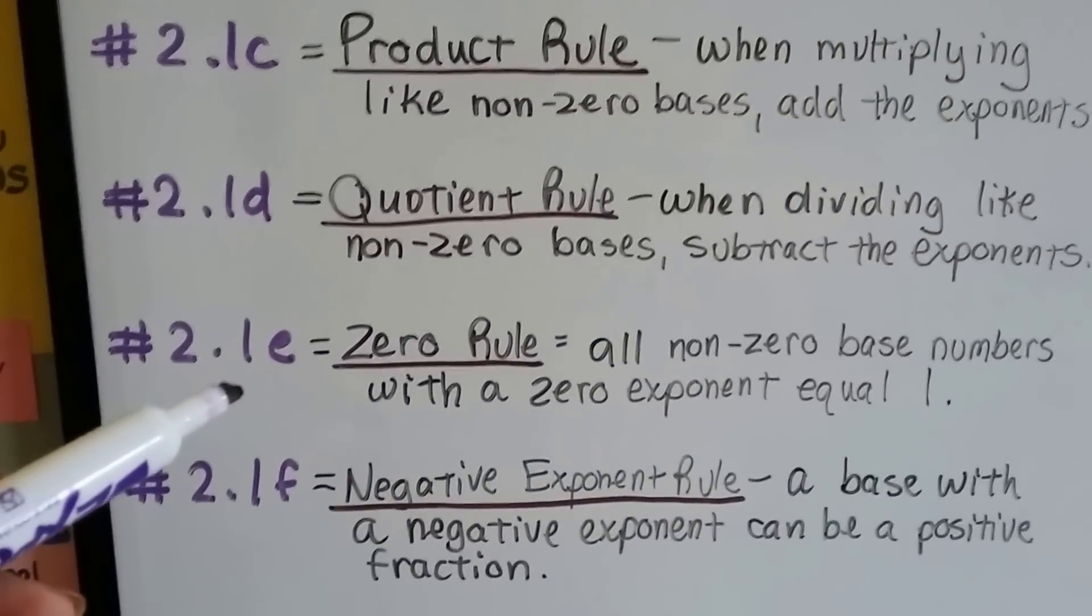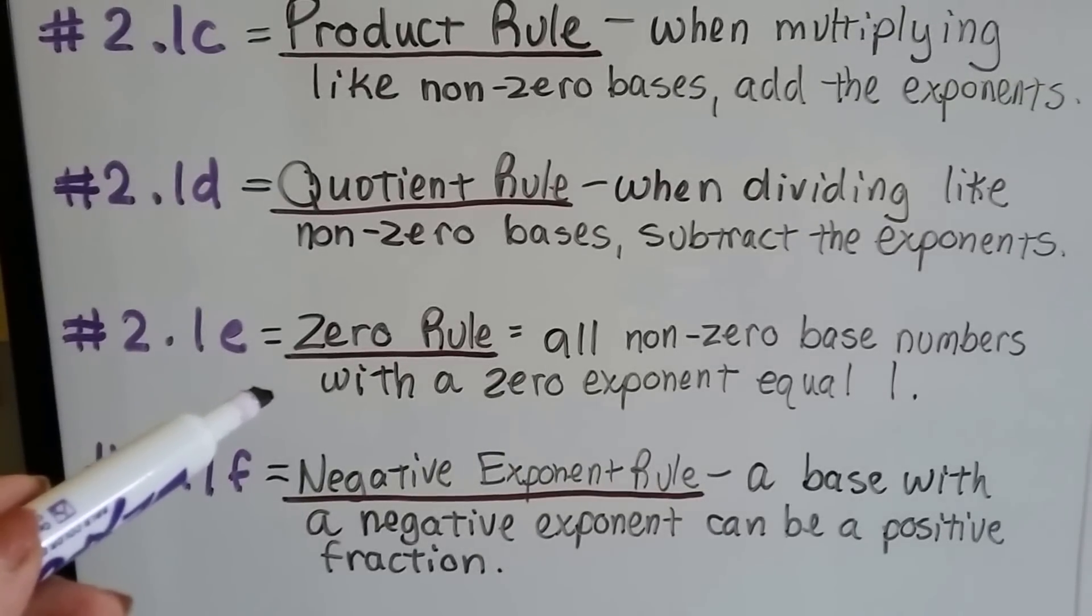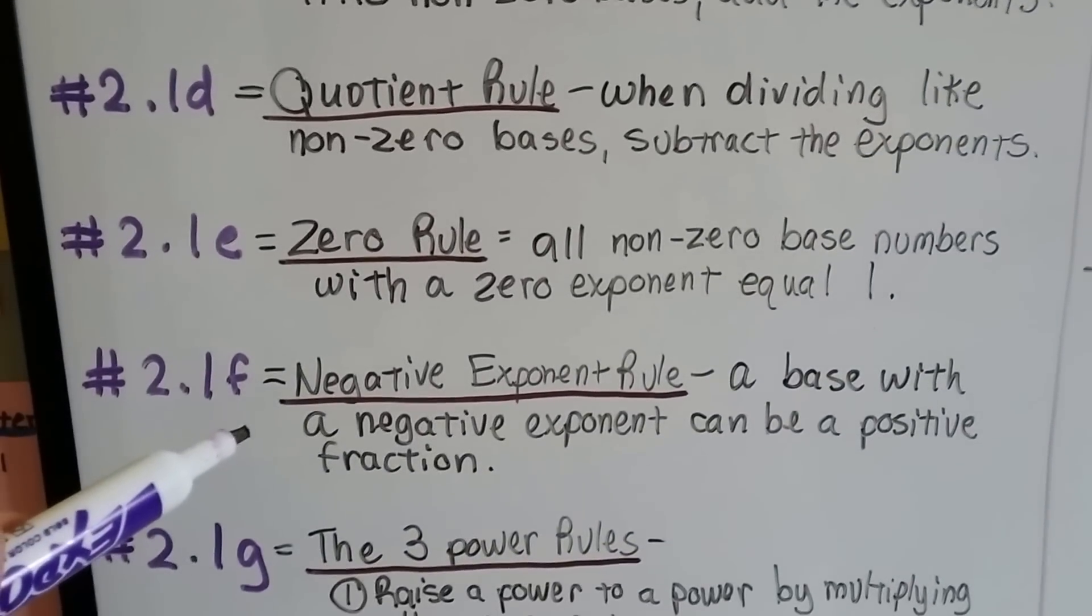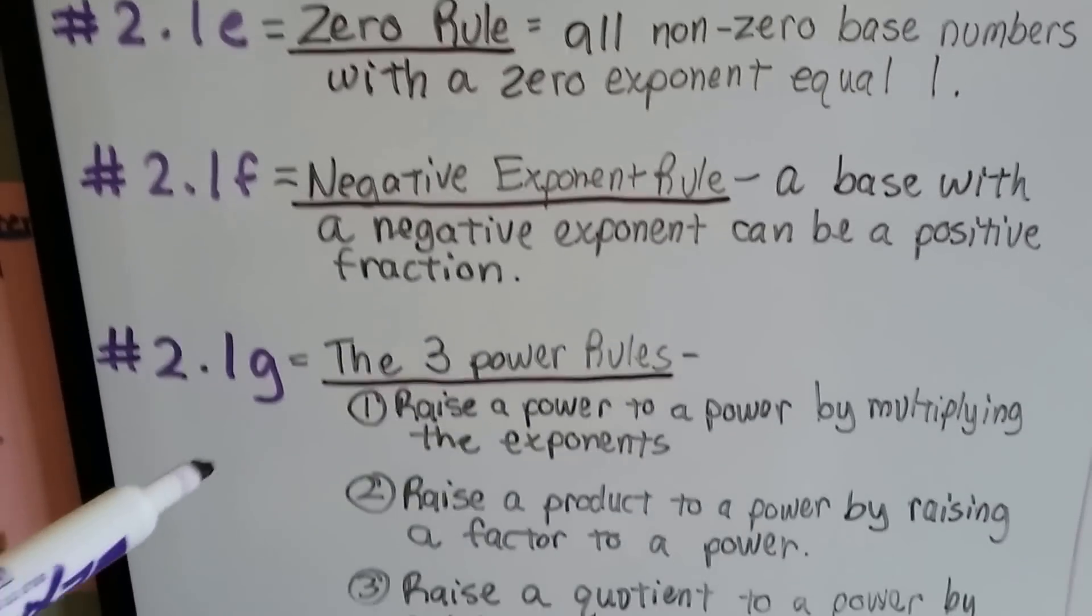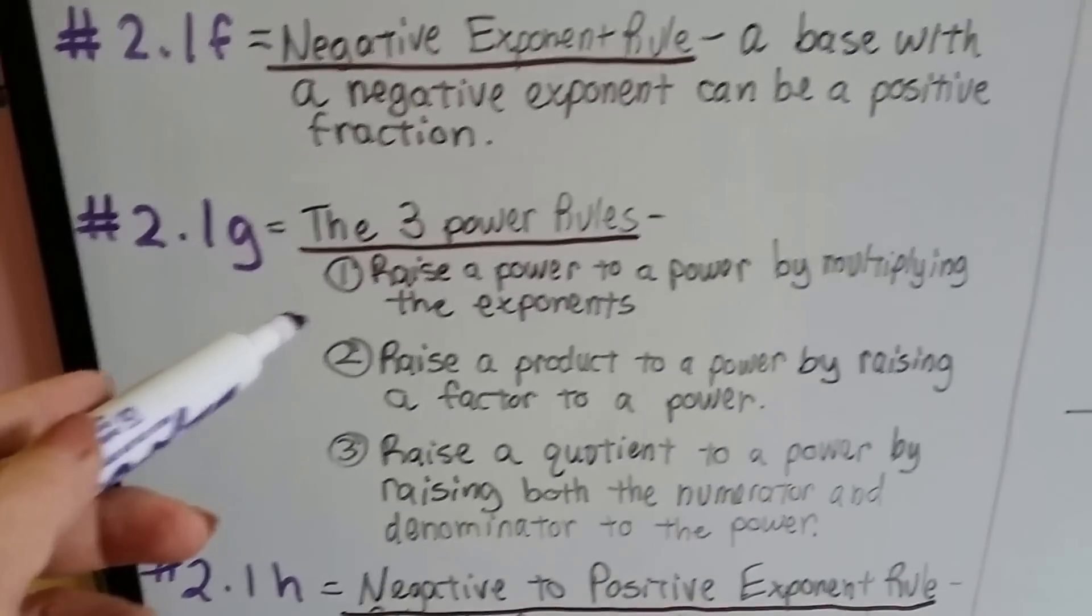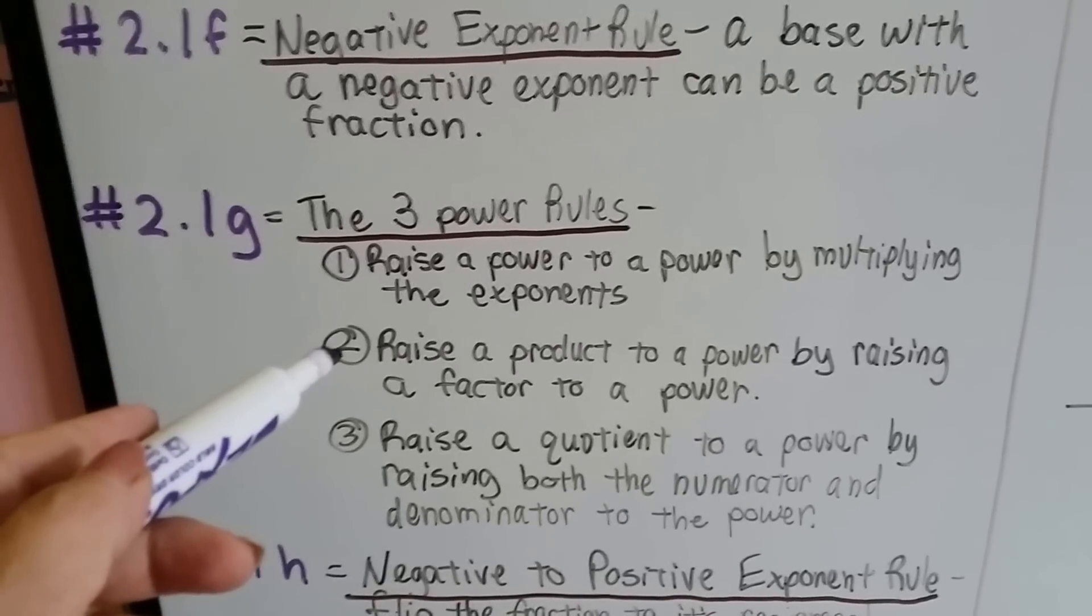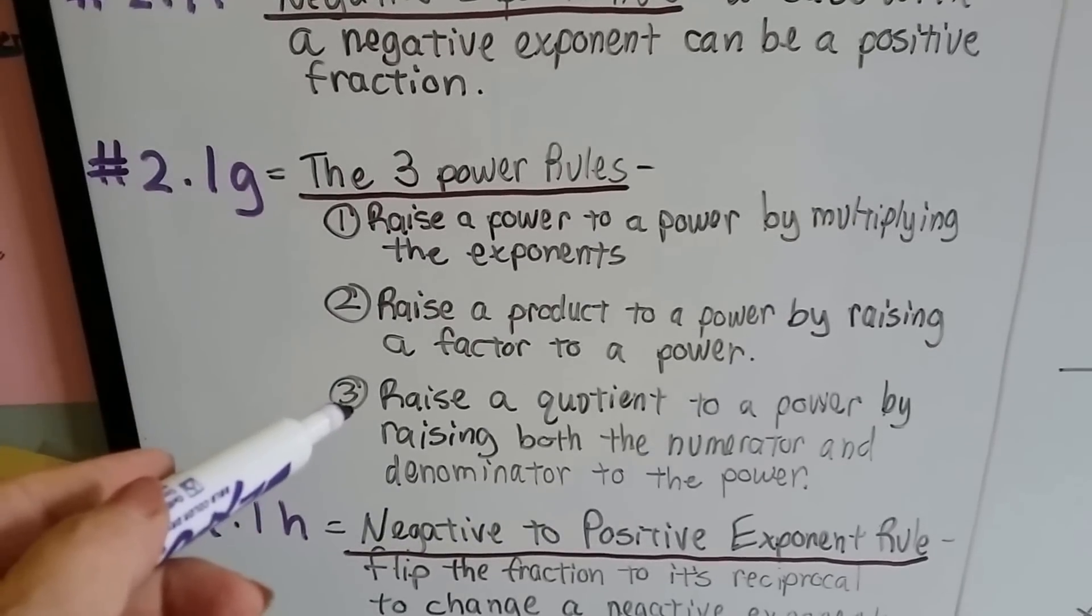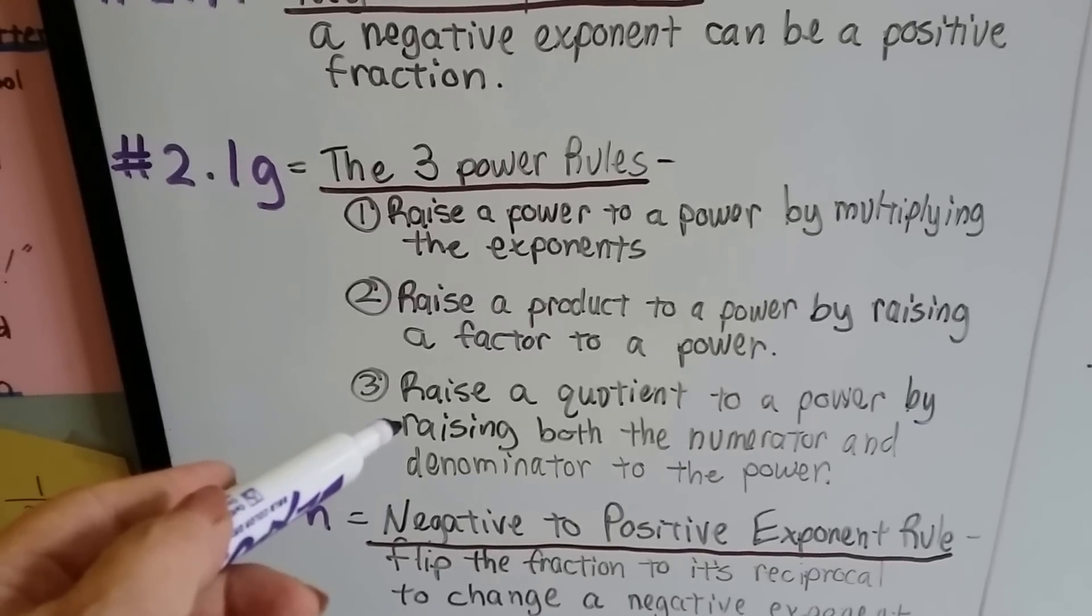In 2.1e, we did the zero rule. It says all non-zero base numbers with a zero exponent are equal to 1. In video 2.1f, we covered the negative exponent rule. A base with a negative exponent can be a positive fraction. In 2.1g, we did three power rules. The first one was if you raise a power to a power by multiplying the exponents. The second one was you raise a product to a power by raising a factor to a power. And the third power rule was we raise a quotient to a power by raising both the numerator and denominator to the power.